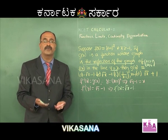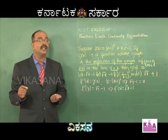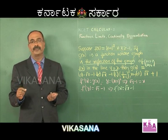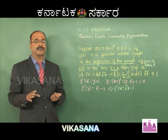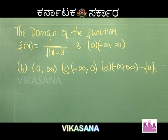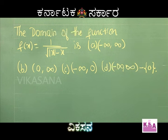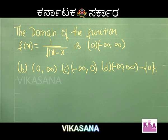After discussing these problems from previous CETs, you should understand the level of questions asked. Most CET questions can be solved in less than 30 seconds. Next problem: Find the domain of f(x) = 1/√(|x| - x). Options: a) (-∞, +∞), b) (0, ∞), c) (-∞, 0), d) (-∞, ∞) \ {0}.